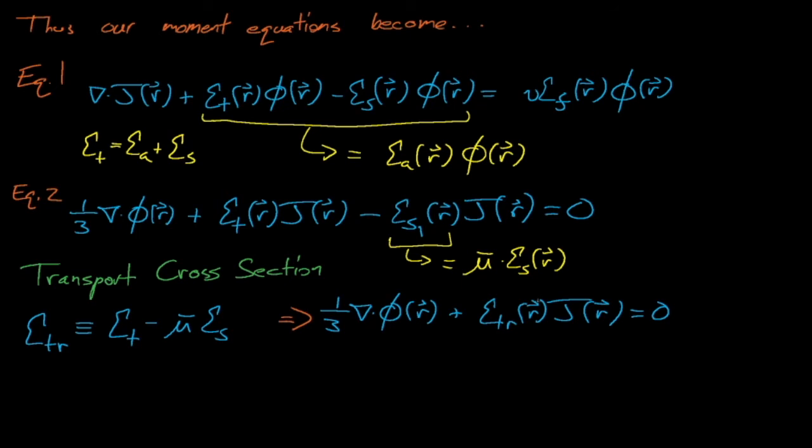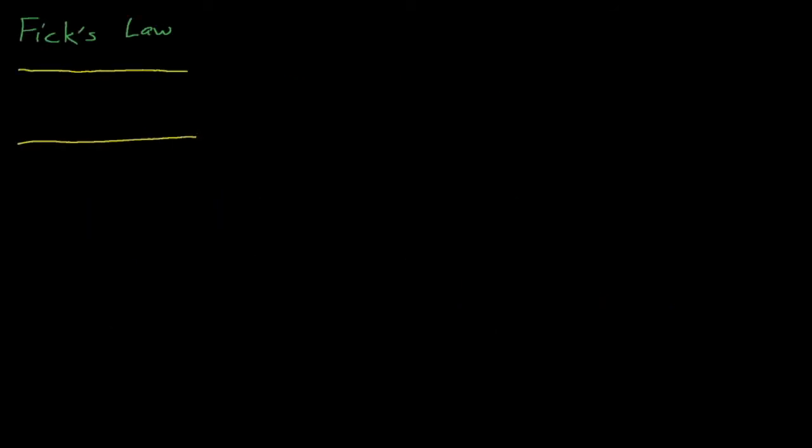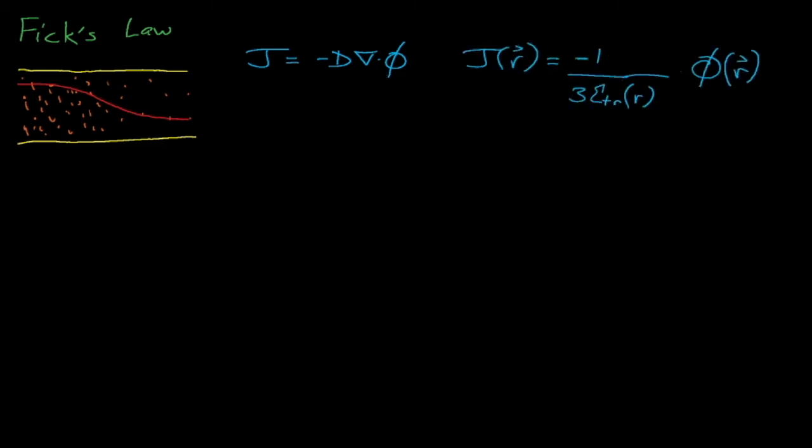From here, we can solve for the neutron current J, which we see equals negative one-third times the gradient of the scalar flux divided by sigma transport. This relationship is strikingly similar to Fick's law, a principle from gas dynamics and mass transfer which describes the rate at which matter diffuses from regions of high concentrations to regions of low concentration. According to Fick's law, the rate at which material diffuses from high concentration to low concentration regions equals the negative gradient of the concentration of that material times that material's diffusion coefficient d. Because of the similarity between Fick's law and our expression for J, and also because of the historical mindset of thinking of neutrons as a gas that diffuses through a reactor, nuclear engineers have incorporated Fick's law into our equations, and have defined the neutron diffusion coefficient to equal 1 over 3 times sigma transport.